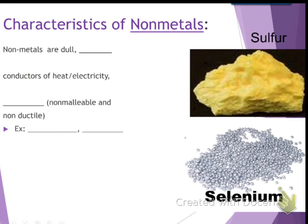Non-metals are dull. They're poor conductors of heat and electricity. And they're brittle, which means they break easy. Examples are sulfur and carbon and selenium. So if you remember the periodic table, the metals were the green section. The non-metals were like the orange on the right-hand side.